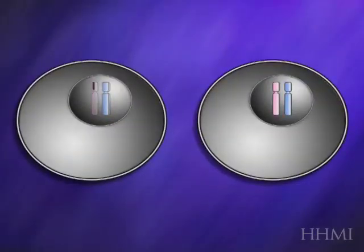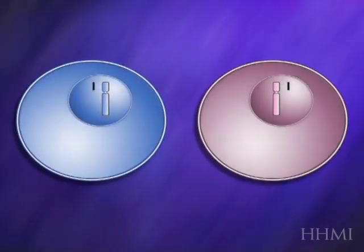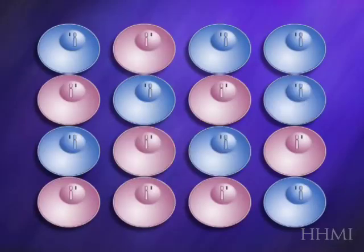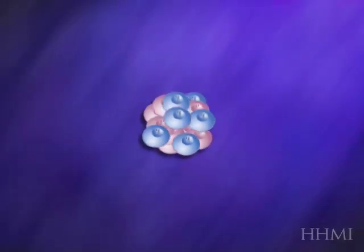But in early embryogenesis, each cell will inactivate one of its X's. One cell will remain with the paternal X as active while the other the maternal one. Now this process will happen at random and you'll have almost half of the cells with the maternal X active, half with the paternal X.